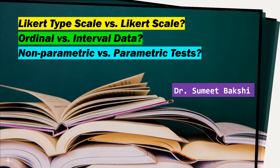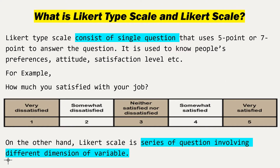The first thing to discuss is the difference between a Likert type scale and a Likert scale. A Likert type scale consists of a single question that uses a 5-point or 7-point scale to answer the question. Whether to use a 5-point or 7-point scale is completely the researcher's choice. It is used to know people's preferences, attitude, and satisfaction level.